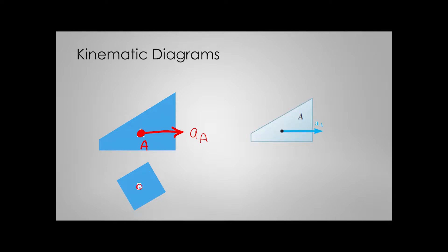For body B, we know that this body is located on another object, so it is moving with two different accelerations. One is the acceleration of the object it is moving on, and the other is the acceleration relative to that object. If this body was not moving on the object and was somehow fixed to it, we wouldn't have any acceleration relative to that object.